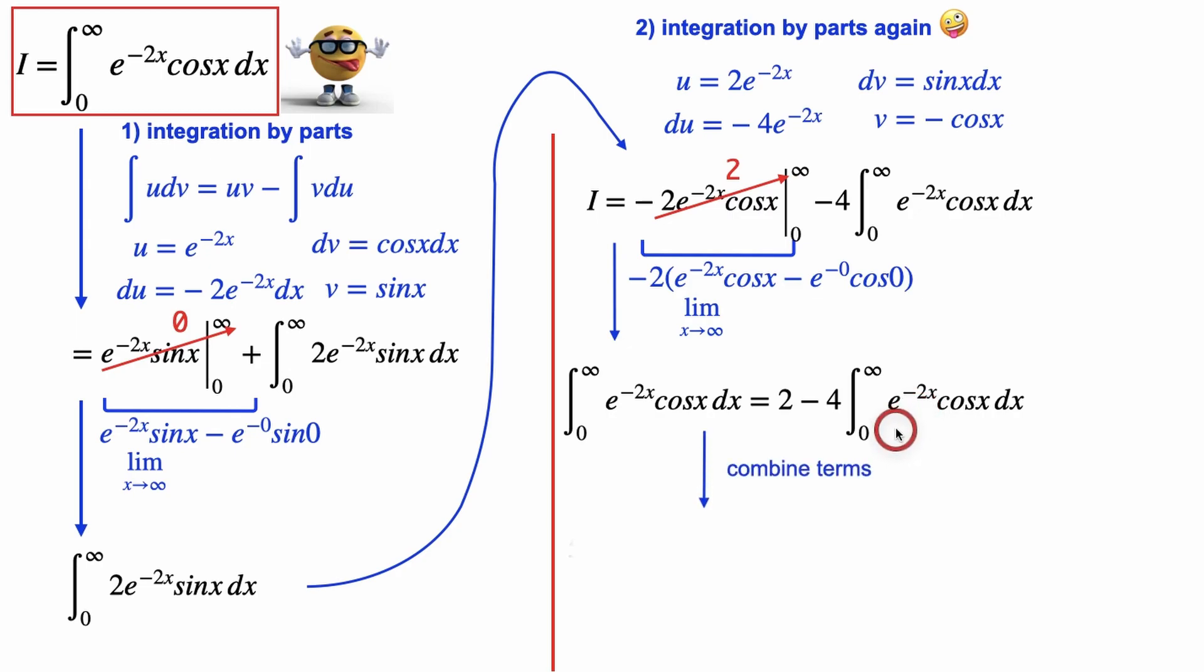So to solve for it, we'll combine the terms, we'll move this over to the other side, there's now five of them, and then we'll divide by five, and we get our answer. So the integral of e to the negative 2x cos x is 2 divided by 5.